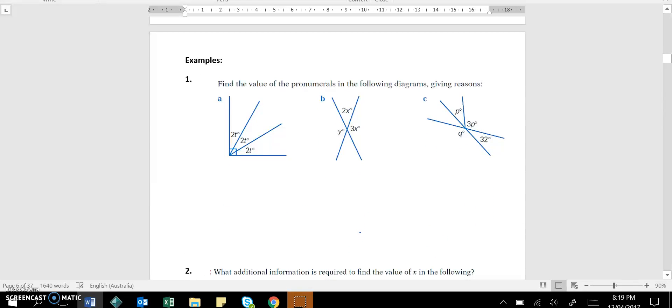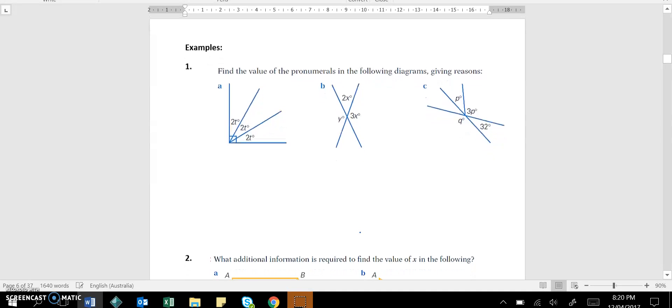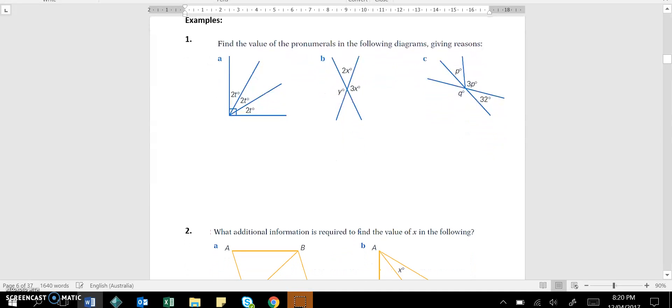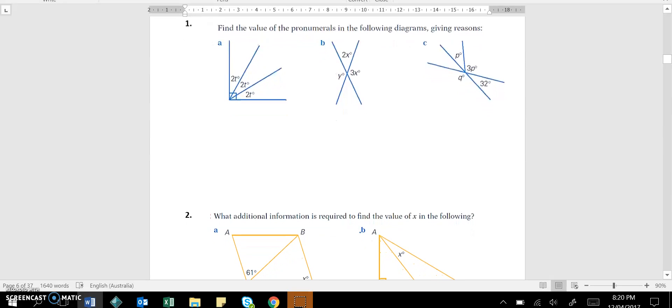So what we're going to do now is a couple of examples looking at how to find missing pronumerals with reasons. The reasoning is probably the most important part in geometry, and it's important that you don't make any abbreviations. So I'm going to take you through some of these and then we'll be finished up for this first lesson. So the question says find the value of the pronumerals in the diagrams giving reasons. So in this first one here I can write down that 3 lots of 2T is equal to 90 degrees.